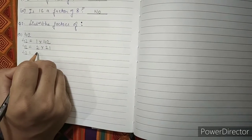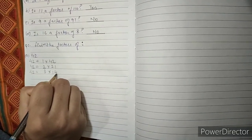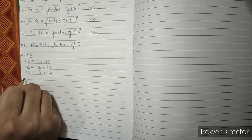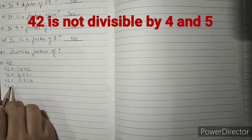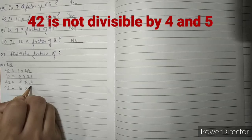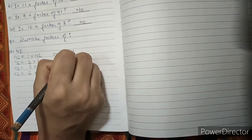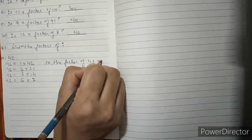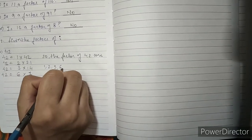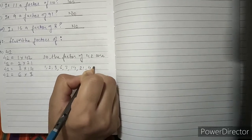Next, 42 equals 3 times 14, so 3 multiply by 14 gives 42. 42 is not divisible by 4. So we write 6: 6 sevens are 42. So the factors of 42 are 1, 2, 3, 6, 7, 14, 21 and 42.